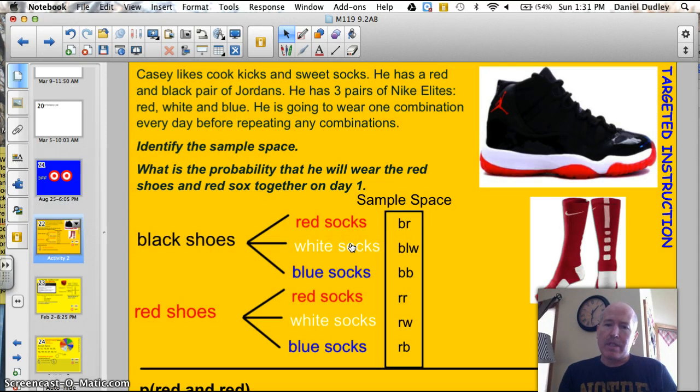Casey likes cool kicks and sweet socks. He has a red and black pair of Jordans. He has three pair of Nike Elites: red, white, and blue. He's going to wear one combination every day before repeating any combinations. Identify the sample space. What is the probability that he will wear the red shoes and the red socks on day one?